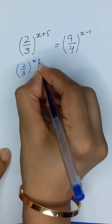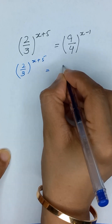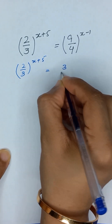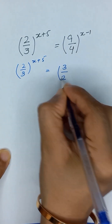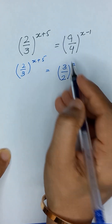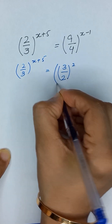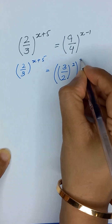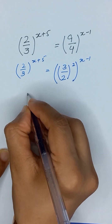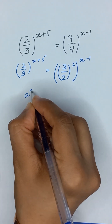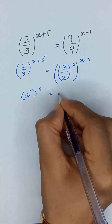We rewrite 9/4 as (3/2)², since 3 squared is 9 and 2 squared is 4, so the right side becomes (3/2) whole squared to the power x minus 1. We will use the exponential rule: a to the power m, whole power n, is equal to a to the power m times n.